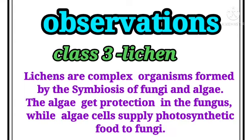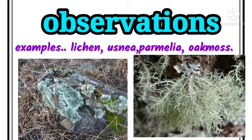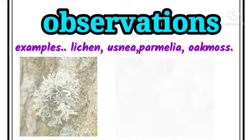Class 3 — Lichens: lichens are complex organisms formed by symbiosis of fungi and algae. The algae get protection from the fungus, while algae cells supply photosynthetic food to fungi. Examples include lichen, Usnea, Parmelia, and Oak moss.